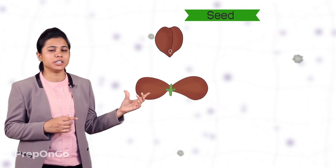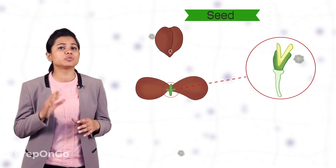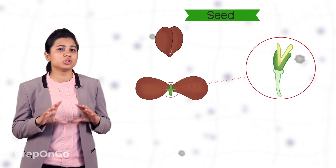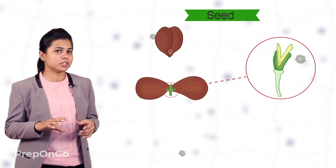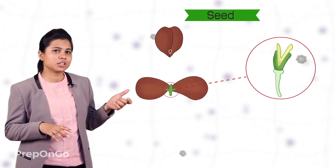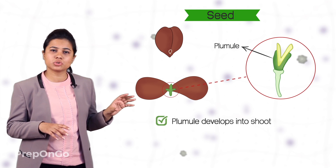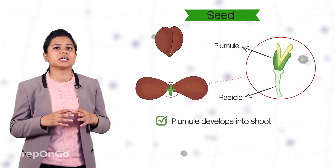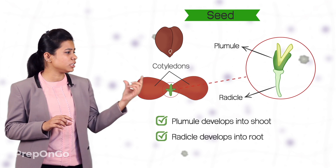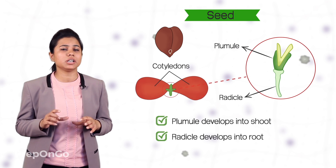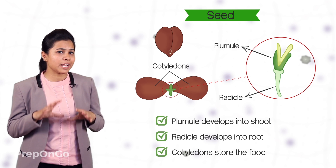Let's look at the seed in a bit more detail. The seed consists of the baby plant or embryo which was formed from the zygote, and this baby plant develops into a full-grown plant. The baby plant has two structures: the upper structure is called the plumule, which develops into the shoot, and the lower structure is called the radicle, which develops into the root. You can also see two structures called cotyledons, which store the food. The baby plant is in an inactive state in the seed, but when it is sown into the soil it gets the suitable conditions — air, water, and warmth — and germinates into a new plant, which produces the flower, and ultimately the process is repeated.